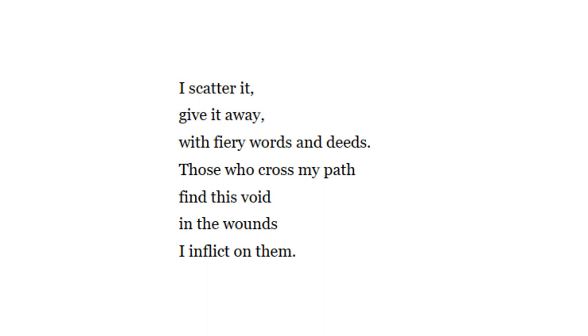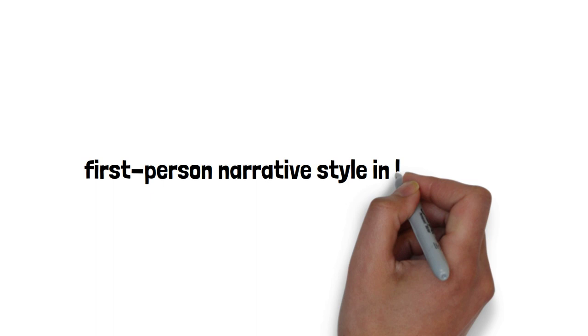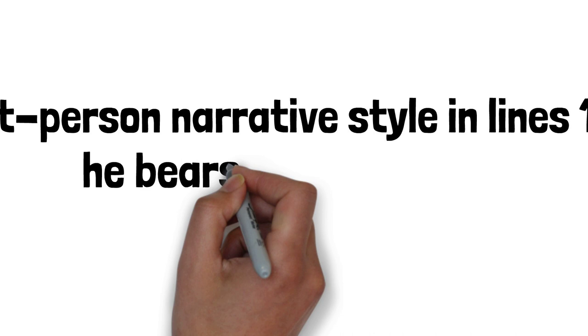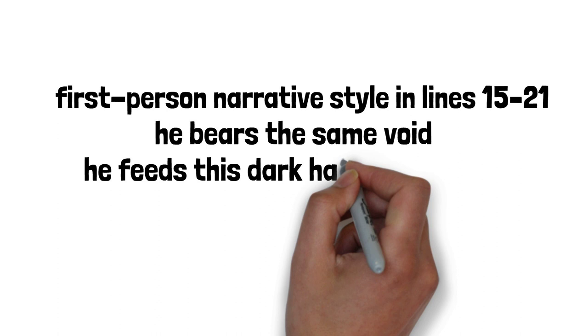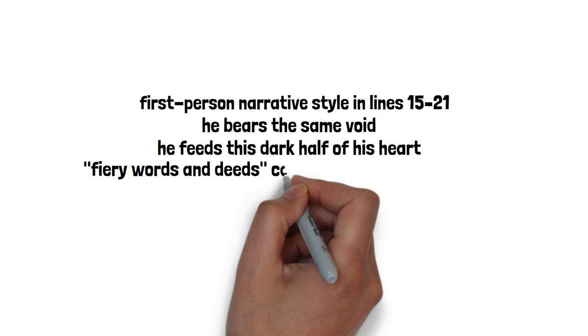The poet switches to first-person narrative style. Muktibodh affirms that he bears the same void as everyone else. He continues by describing how he feeds this dark half of his heart. His fiery words and deeds cause people's minds to suffer.